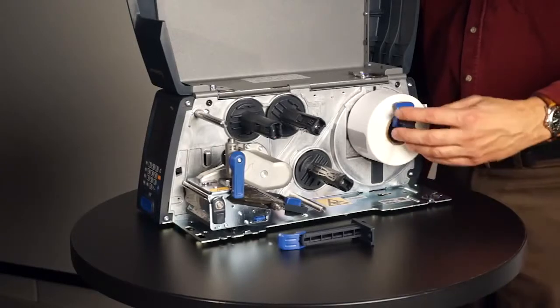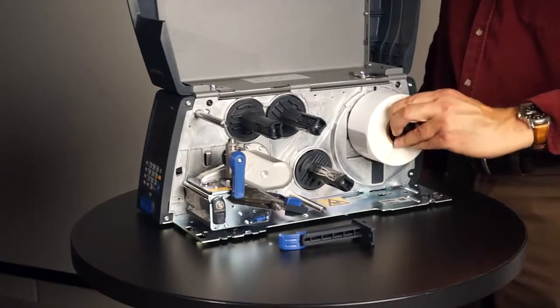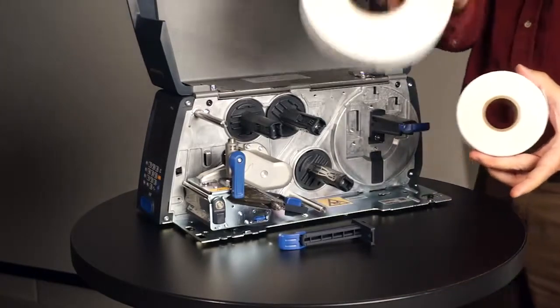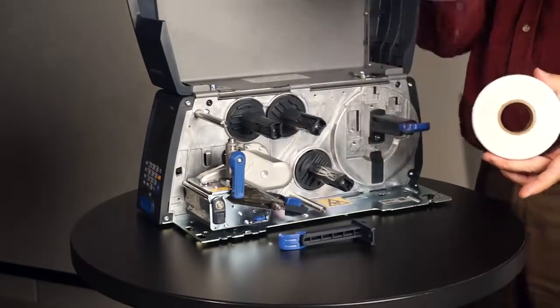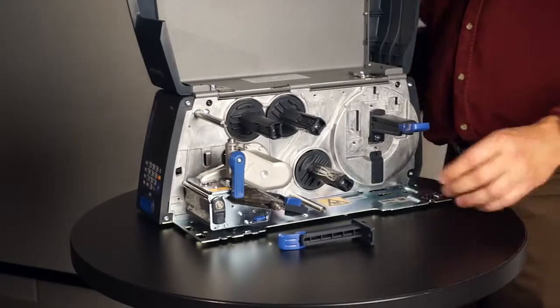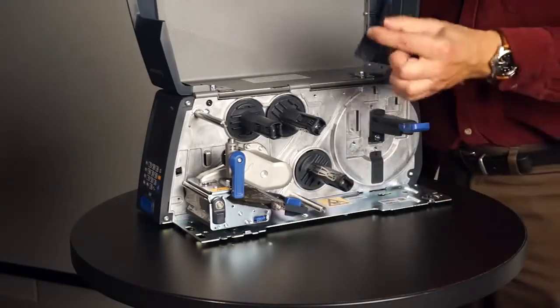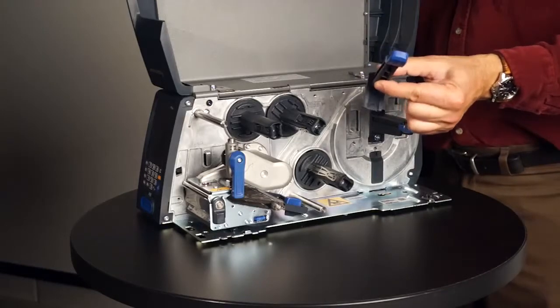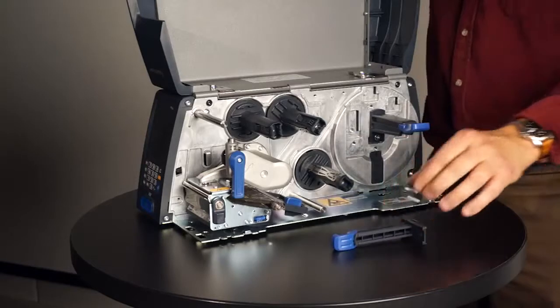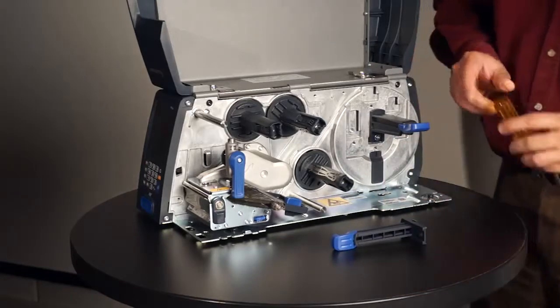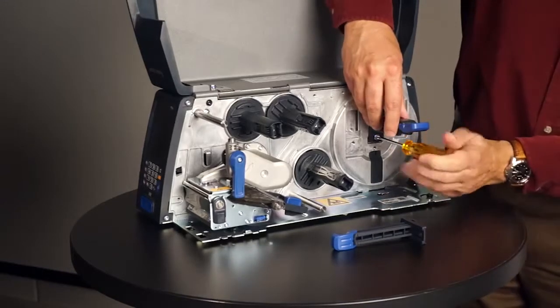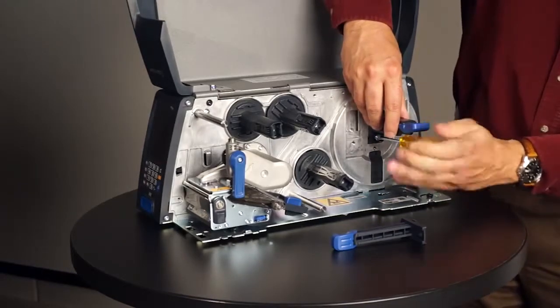The BM23C standard media arm supports media core sizes of 1.5 inch and 3 inch in diameter. If your application requires an even smaller media core of 1 inch in diameter, you can install an accessory media arm supporting 1 inch media core by removing the standard media arm using a Phillips screwdriver.